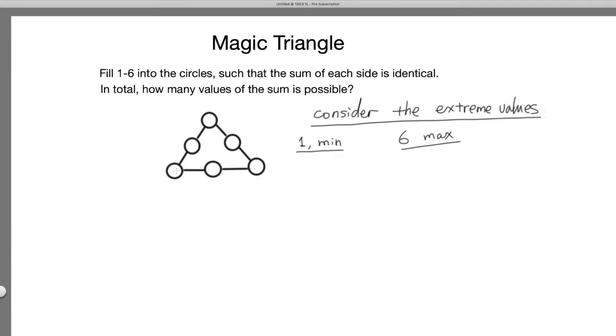Let's think about for each of the sides, what is the smallest value possible? If you have a 1 on that side, the maximum value it can go is 1 plus two other numbers. The largest it can go is 5 and 6, so the largest is 12.